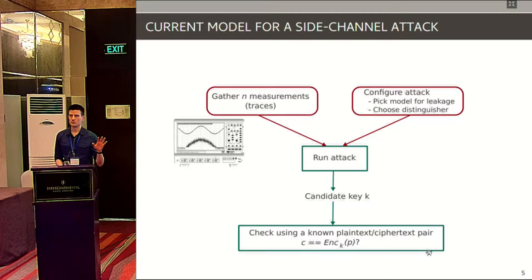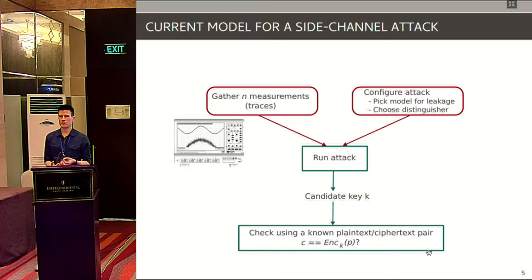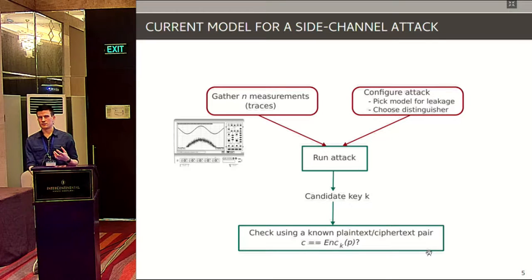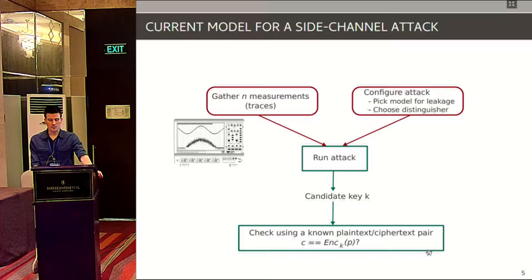A high-level view of a side-channel attack: an adversary gathers measurements called traces — power consumption or EM radiation — hoping they contain information leakage on the secret key. The attacker then defines a strategy consisting of two main things: first, a model for the device's leakage, which can be guessed, derived, or estimated, and which the adversary hopes matches what's going on inside the device; and second, a distinguisher — a statistical method or algorithm that compares the model leakage with the real leakage in the measurements.